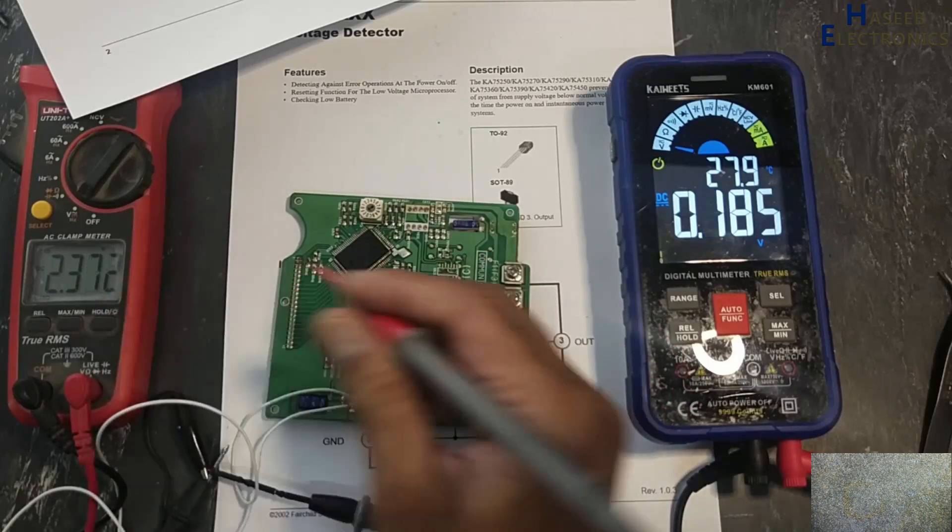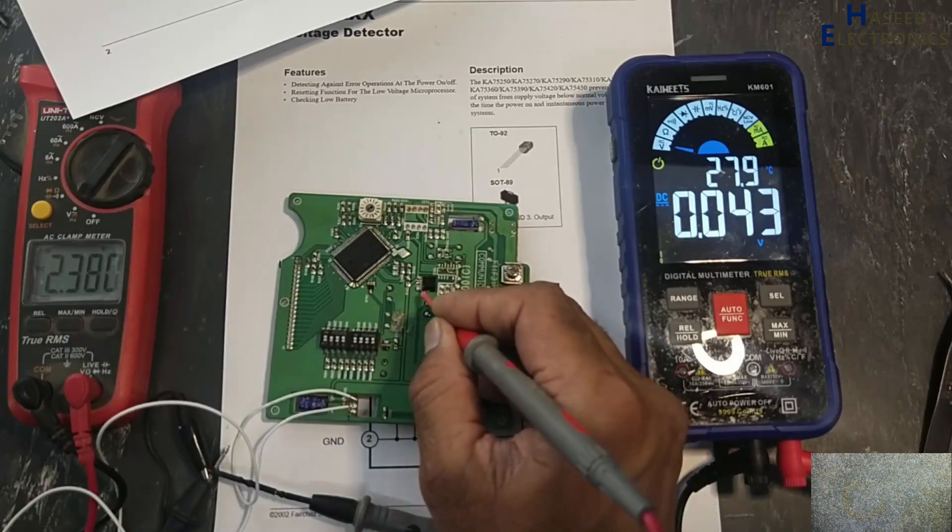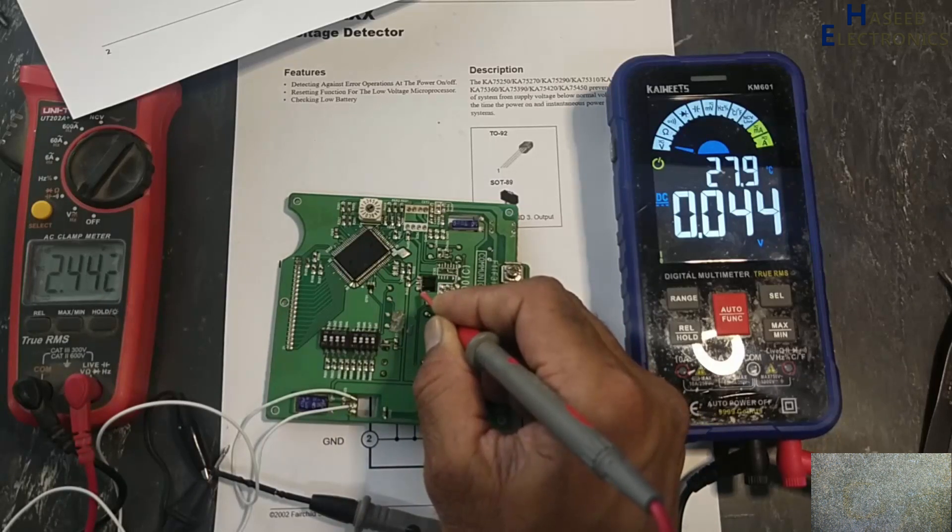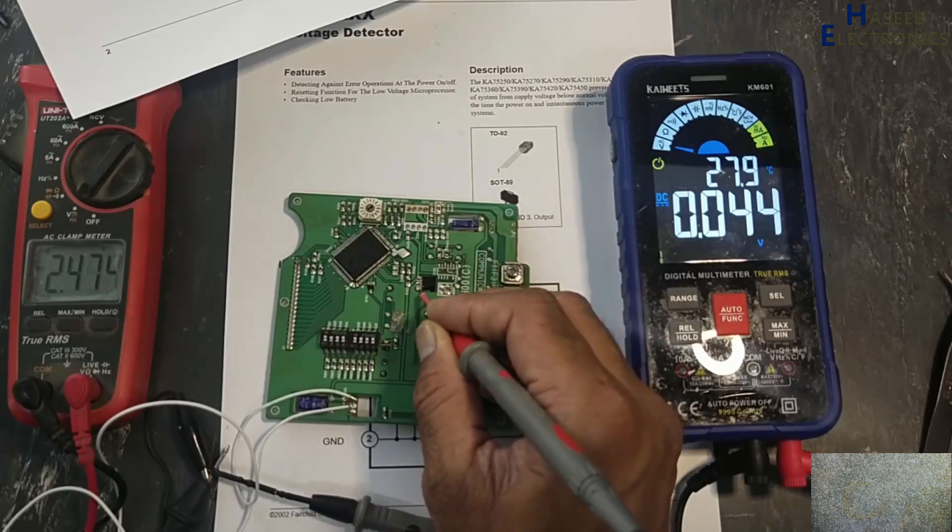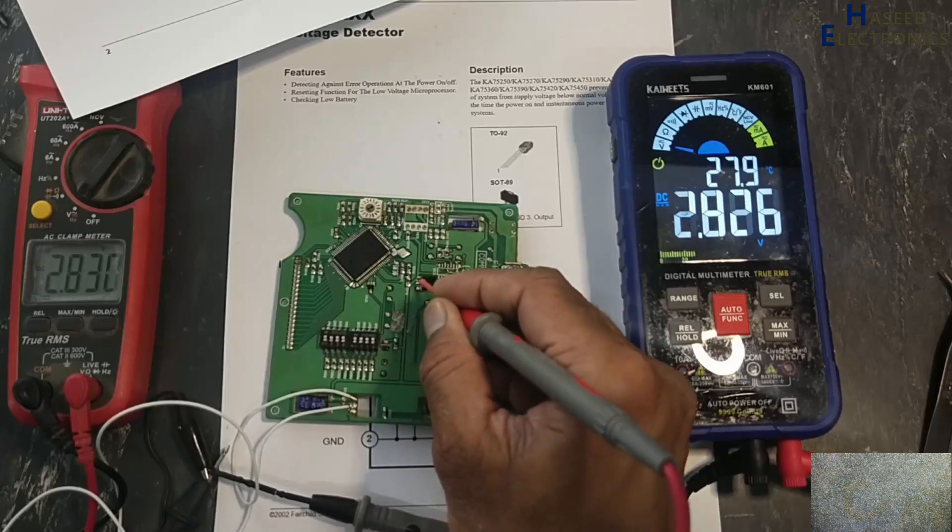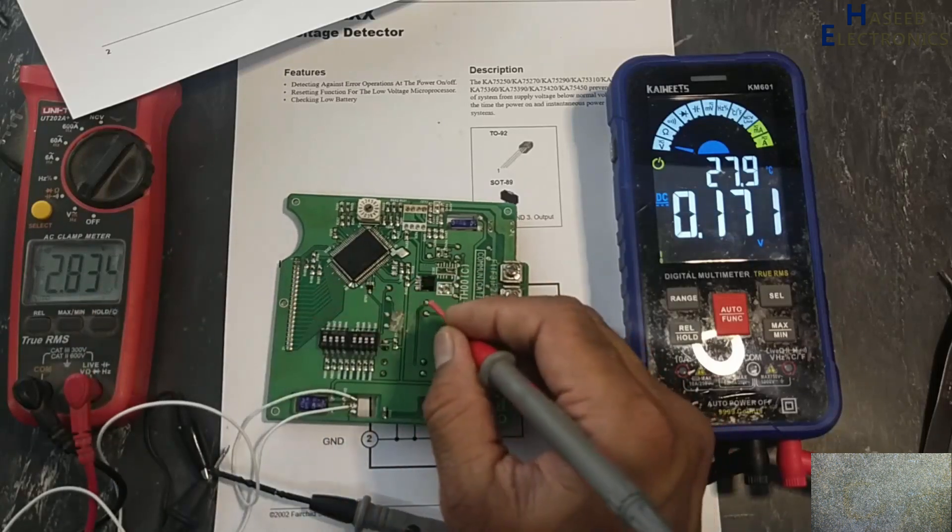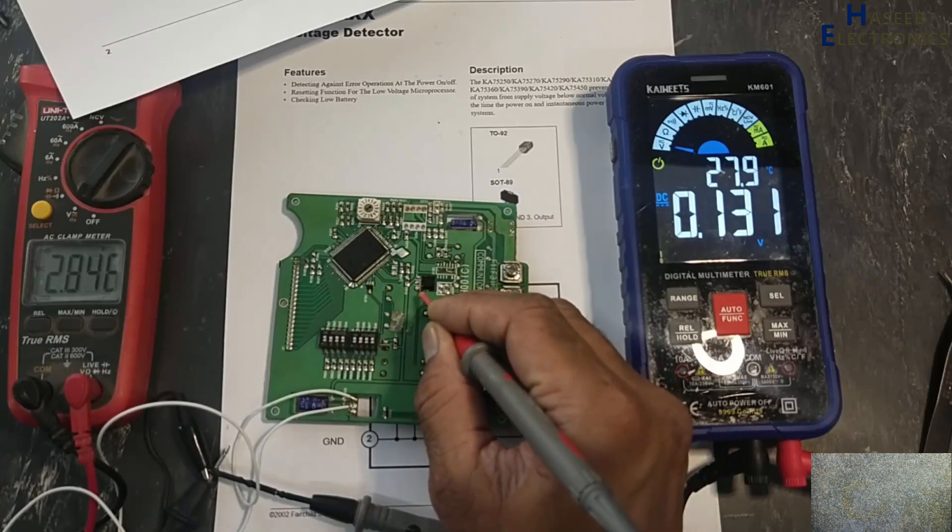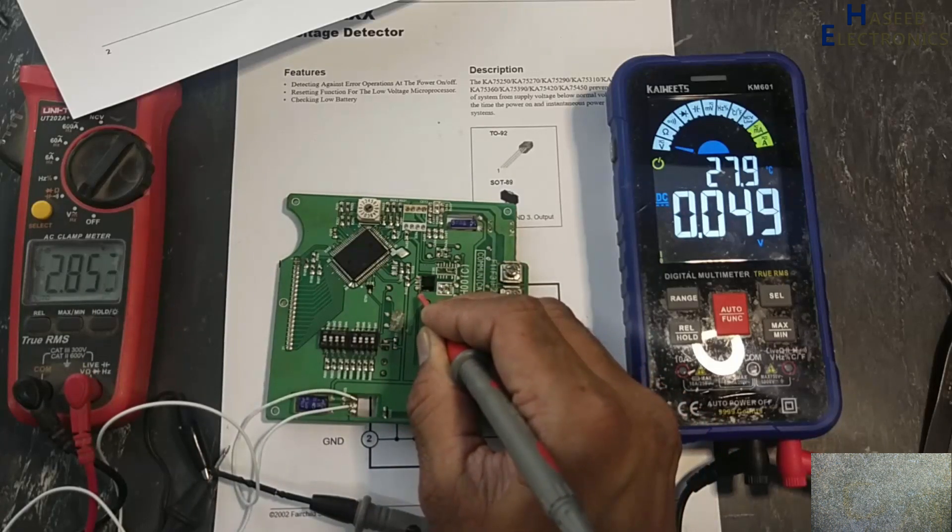2.3 volt. Still there is low output at pin number three. At input 2.8 volt, the same here, but output is still low. We will compare both multimeters.